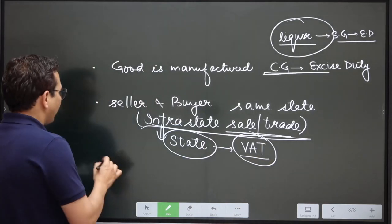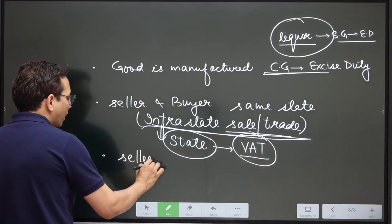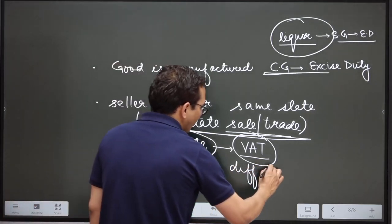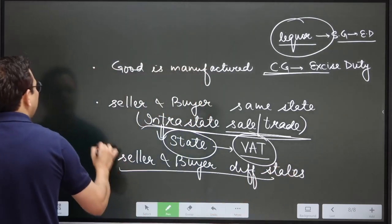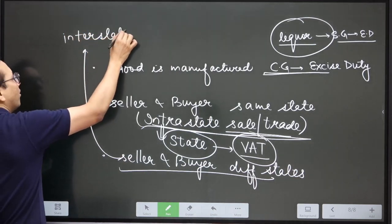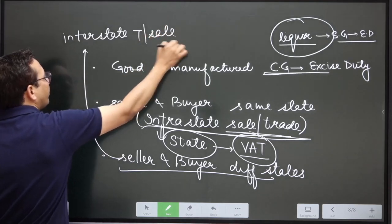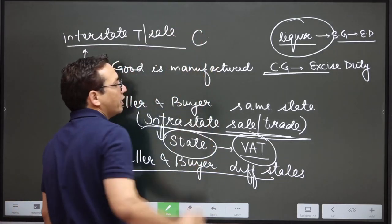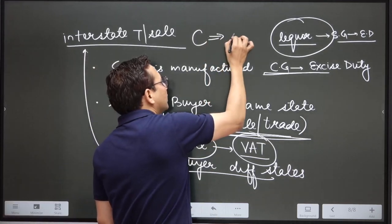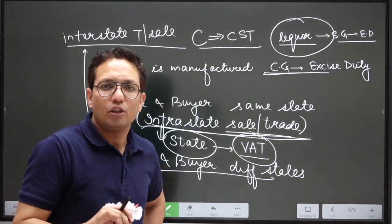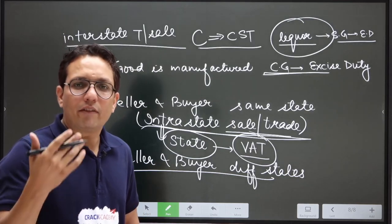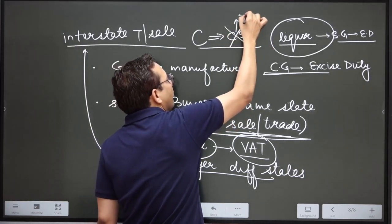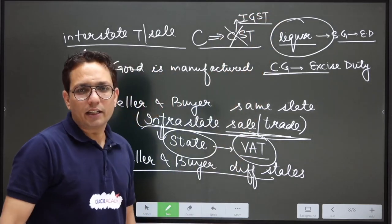It's quite possible that the seller and buyer are in different states — for example, the buyer is in Punjab. If the seller and buyer are in different states, that is a case of interstate trade or interstate sale. Whenever we have interstate trade, the central government would impose a tax called central sales tax, or CST. As of now, we do not have CST — in place of CST, we have IGST, which is integrated GST or integrated goods and services tax.